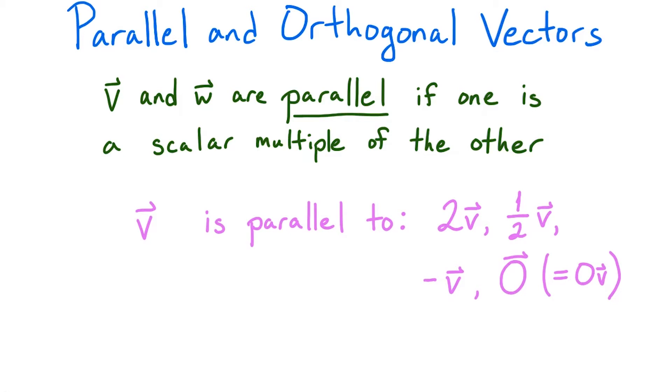it follows that v and the zero vector are parallel too. Also, it's worth noting that v is parallel to itself, since 1 times v equals v. Note that we consider two vectors to be parallel even if they point in opposite directions, such as the case of v and -v. All that matters is that we can multiply one by a scalar to get the other.